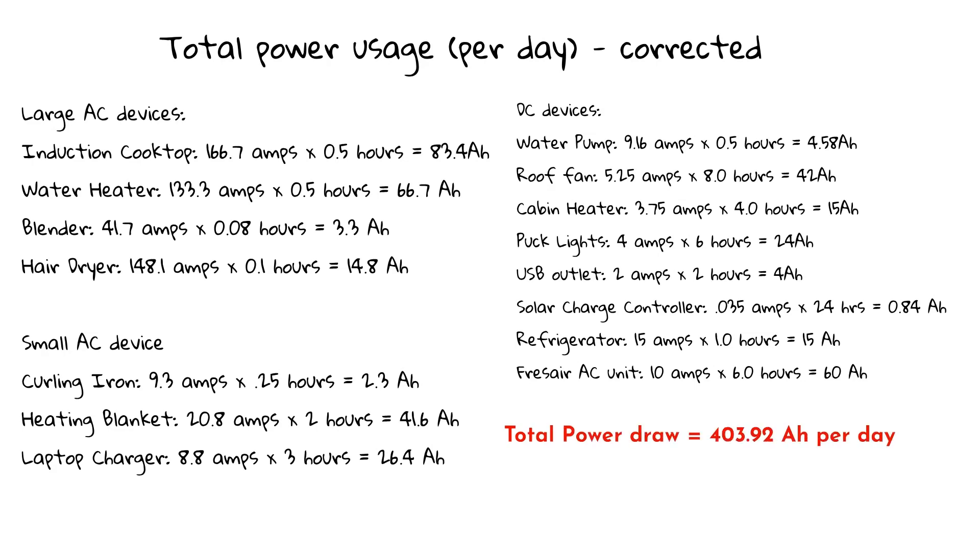With the revised calculations, we've got a total of 403.92 amp hours per day. That is certainly higher than our 200-amp battery system. We thought about adding a third battery, but we're going to run off the two batteries. I have a good friend who lives out of a van and has been running off one battery for about two years, and only recently added his second. So we're going to chance it with two batteries and see if it meets our needs. If we need to add a third battery later, we'll certainly do that.